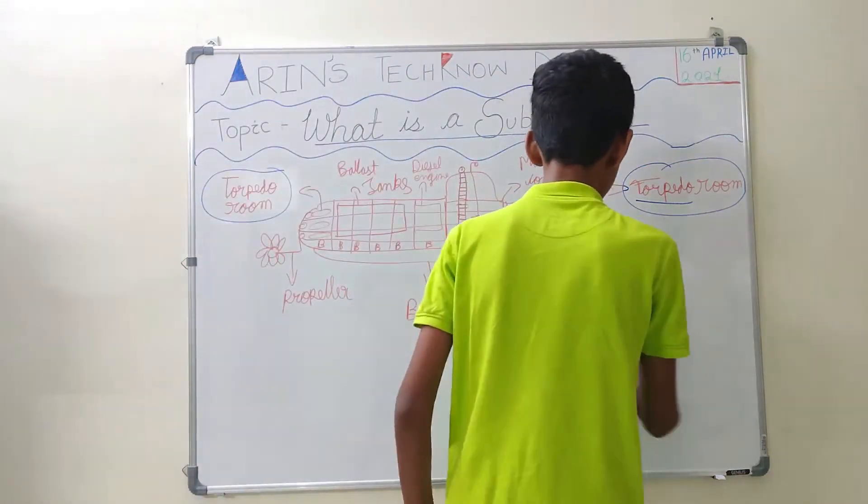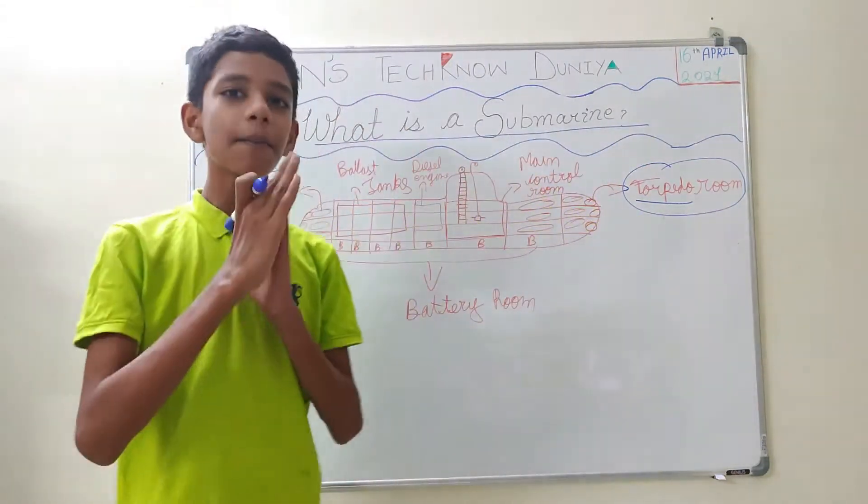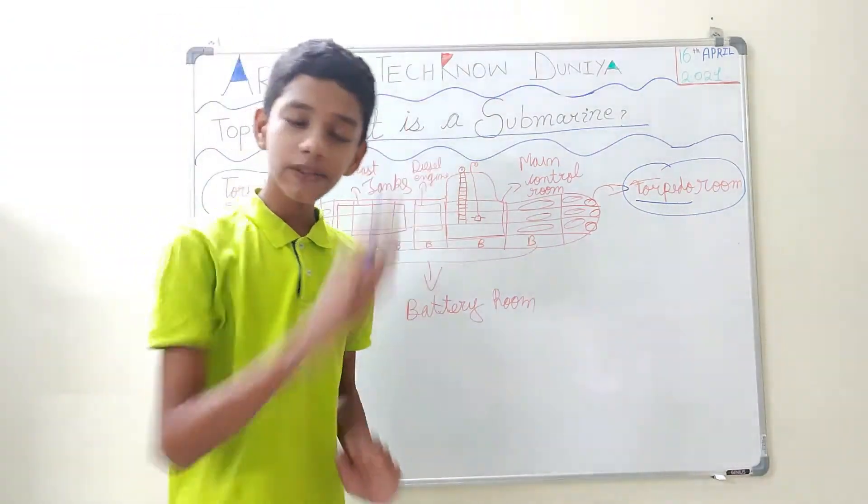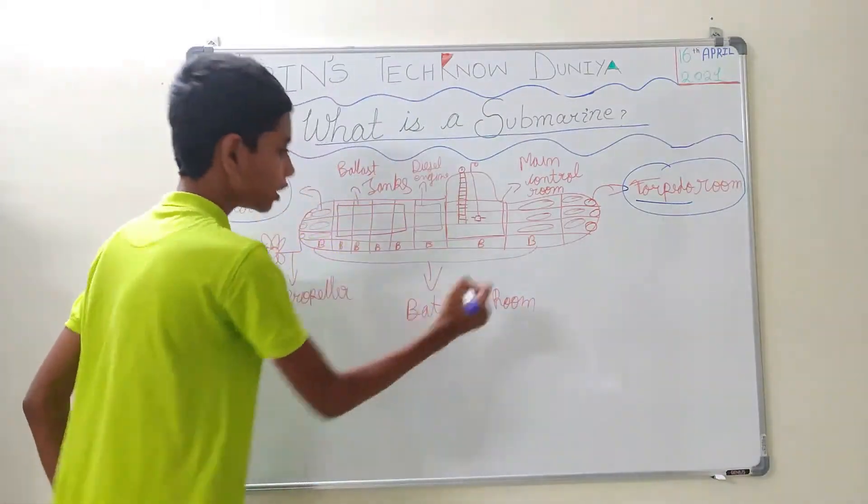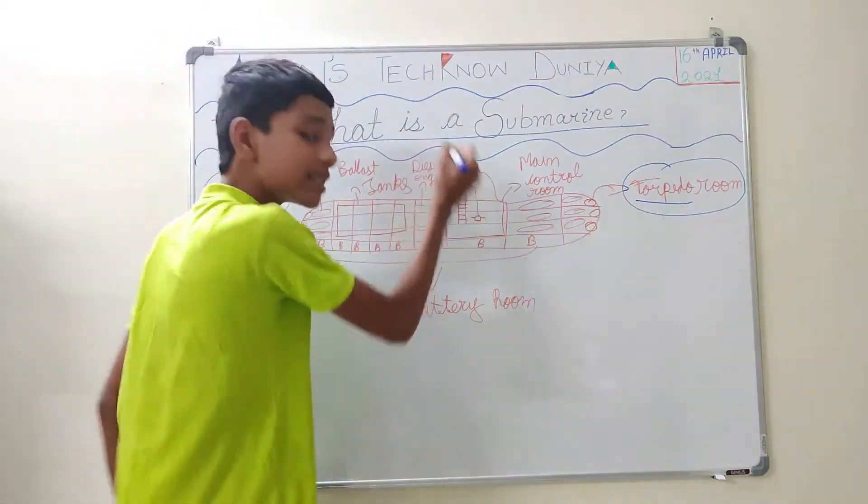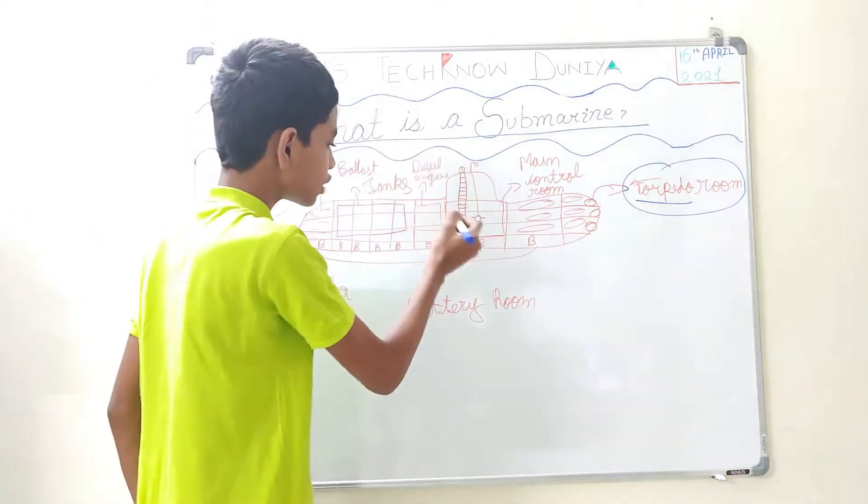The next is the battery room. This is the most confusion of normal people that they think that submarine runs on diesel. But that is totally wrong. They have a battery room. Whenever the submarine is on surface, they use this diesel engine to generate electricity and charge the batteries.